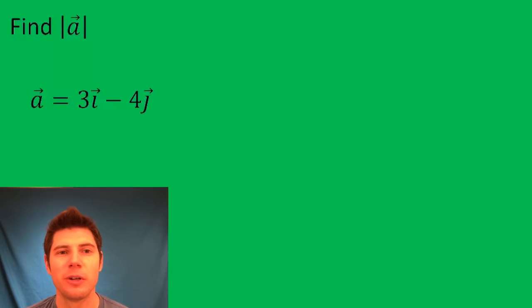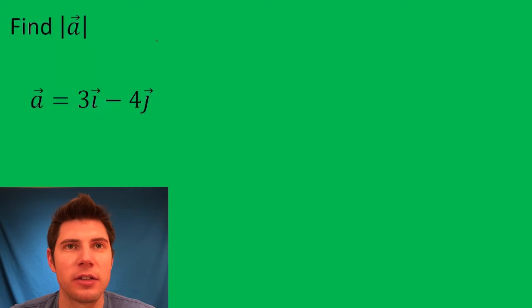Hey guys, welcome to this vector problem. We are going to find the magnitude of 3i minus 4j. This right here is called magnitude.